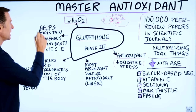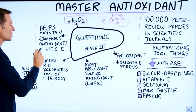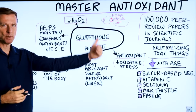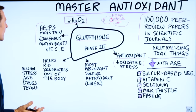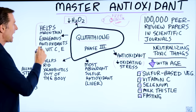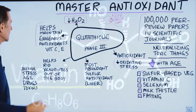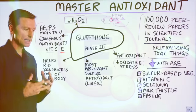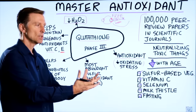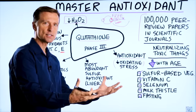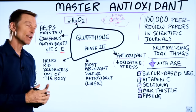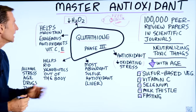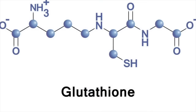Also, glutathione helps maintain something called exogenous antioxidants. Exogenous are those things that come from outside the body. So glutathione will help maintain antioxidants that come from the diet, like vitamin C and vitamin E. And these other antioxidants from the diet can also help maintain glutathione in return.